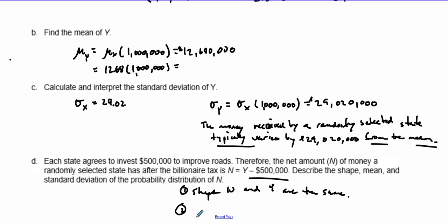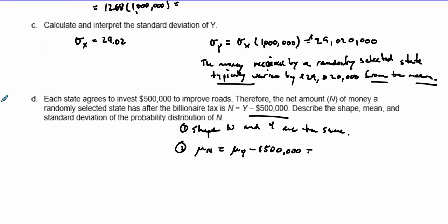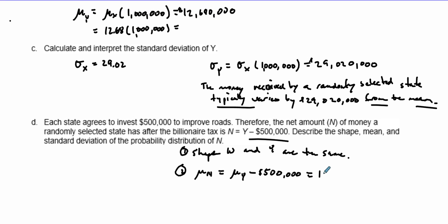For the mean, we know the mean of N equals the mean of Y minus $500,000. Taking that value, we subtract those amounts and get 12,180,000 dollars.